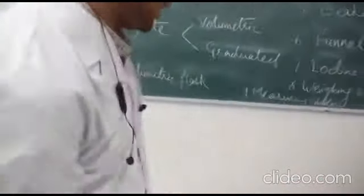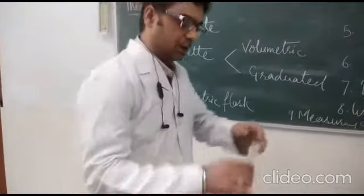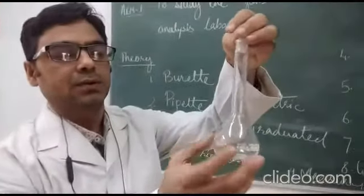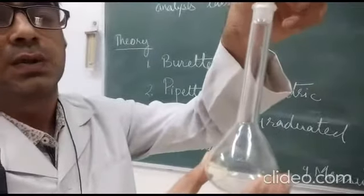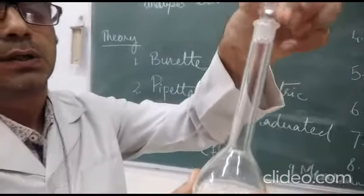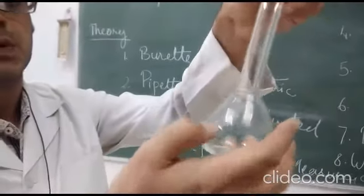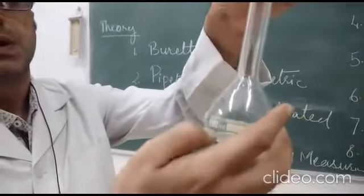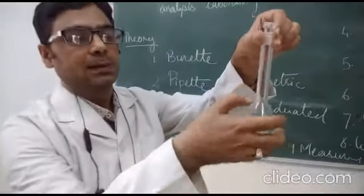Next we have the volumetric flask. This is the volumetric flask — we have already shown you pictures of it, and now we are showing how you will use it in the lab. It has a cork stopper and a single mark denoting its volume. This one is of 100 ml, so the mark indicates the 100 ml level.